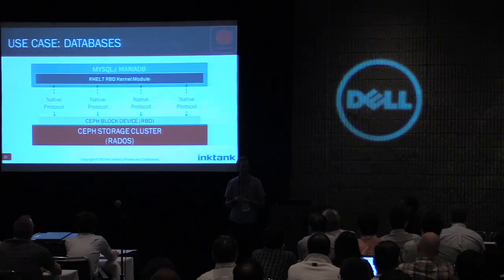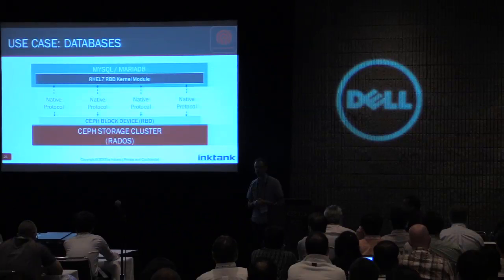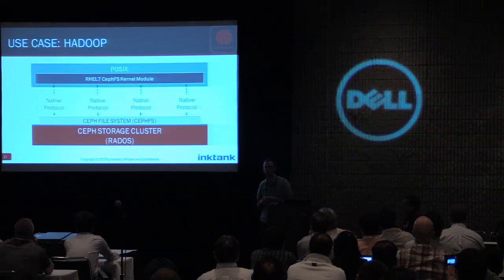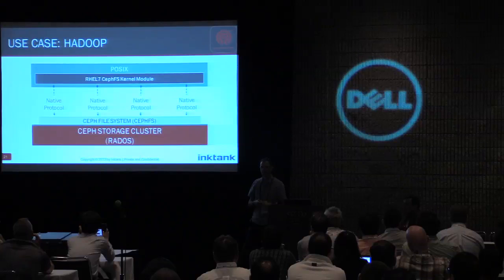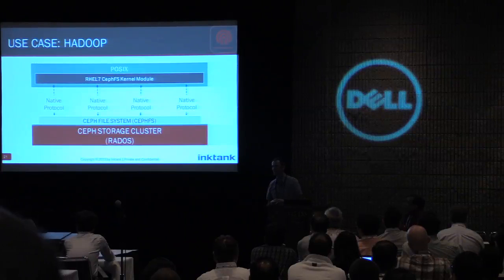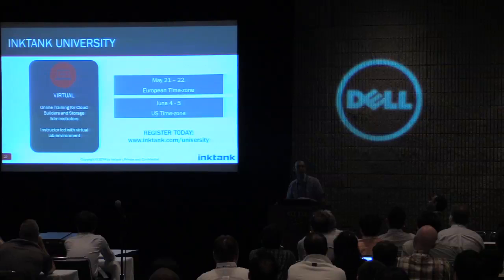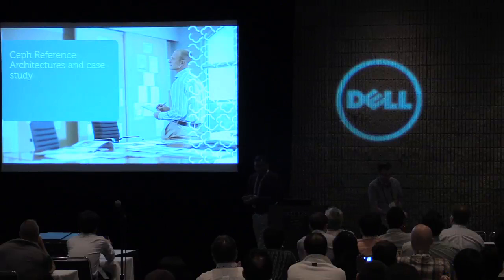Combined with cache tiering and the RBD kernel module now being compatible with the kernel shipping in RHEL 7, this will really lend Ceph to handling latency-sensitive applications, particularly databases. We're working with database vendors to optimize and tune all of this and hope to produce reference architectures. Hadoop will likely be one of the early use cases for the file system. Subject to ongoing conversations with Red Hat around resources, we'd like to get CephFS to GA by end of year or early next year — at which point we'll probably call it Ceph 1.0, having reached all original design goals. If you're running Ceph with OpenStack, sign up for our virtual training class.